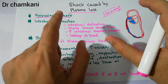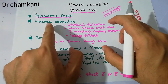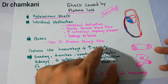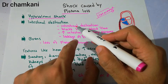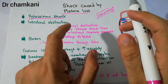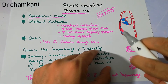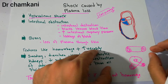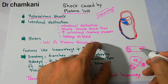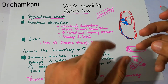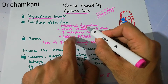The most important causes of hypovolemic shock caused by plasma loss are intestinal obstruction and burns. In intestinal obstruction, intestinal distension occurs due to the obstruction — the intestine twists on itself or there is some blockage such as a mass. In either case, there is distension.